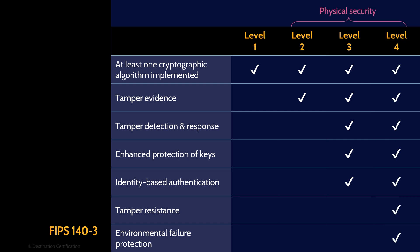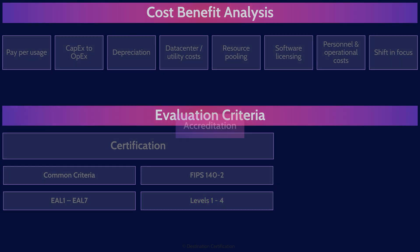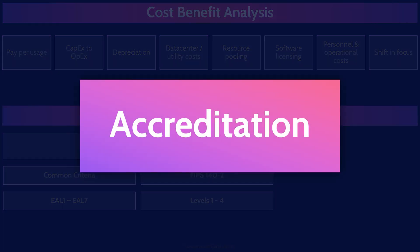This is an important thing to remember: physical security requirements apply at Level 2 and above. Now the final part of evaluation criteria is accreditation. The whole point of evaluation criteria is to help an organization evaluate and compare different products and choose the best solution. The final step in selecting a product is to get management's approval — for them to sign off. This is accreditation: the official management sign-off for a set period of time to purchase and deploy a product in the organization.